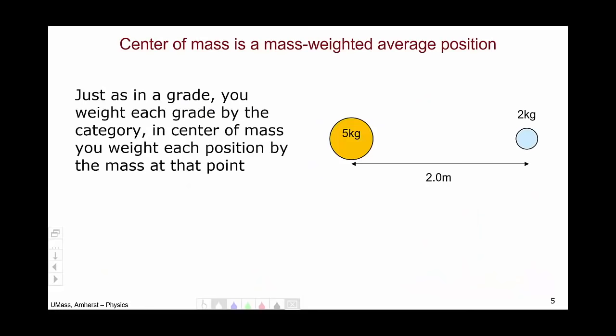Center of mass is similarly a weighted average. Only we're using mass to weight our average. And we're averaging position. So let's look at this particular example of a 5 kilogram object and a 2 kilogram object. And let's calculate the center of mass for these two objects.